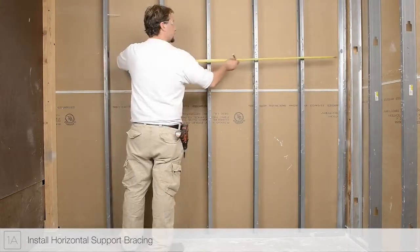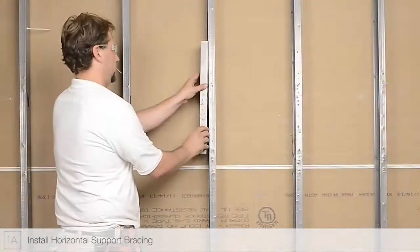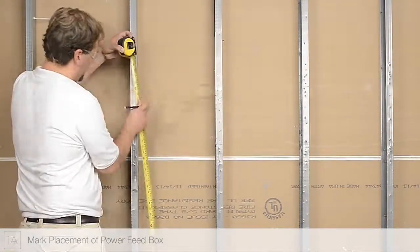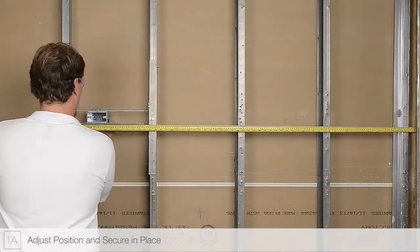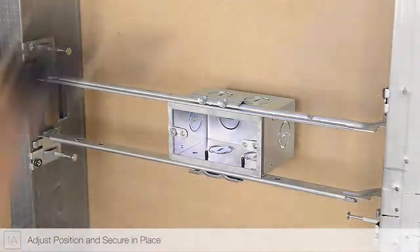Measure and mark the placement of the junction box. Install horizontal support bracing. Mount the junction box to the horizontal support bracing. Adjust the junction box to match the marked position and secure in place.